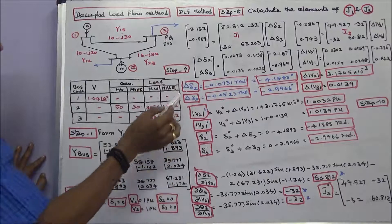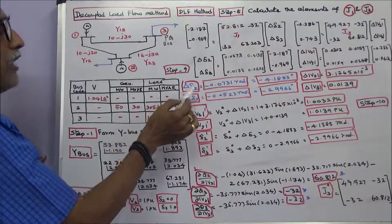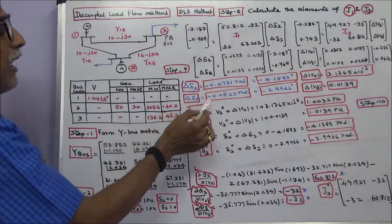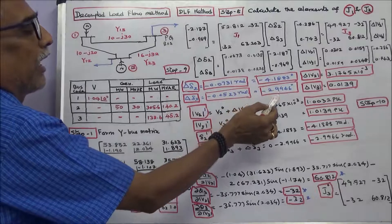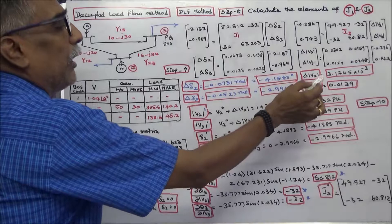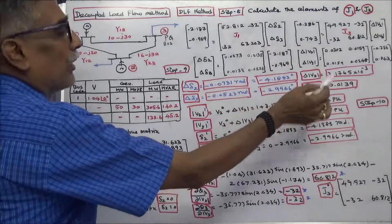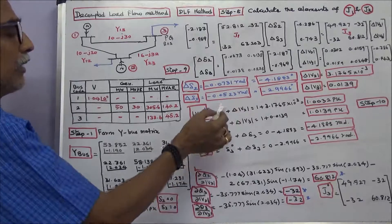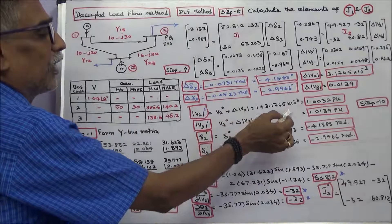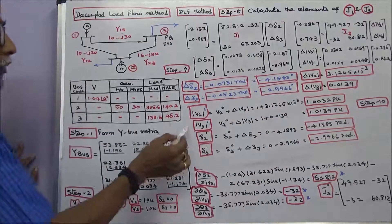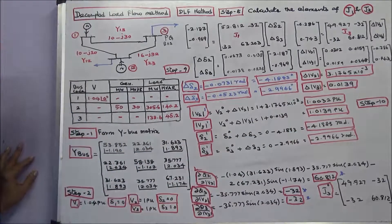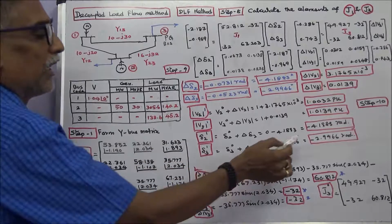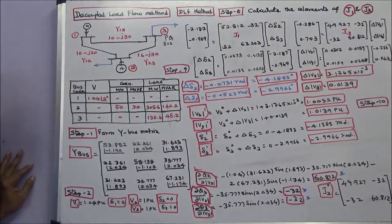Step 9: Calculate the change in delta 2 and delta 3, and changes in voltage magnitudes. Change in delta 2 = -0.07 radians or -4.1883 degrees. Change in delta 3 = -0.0523 radians or -2.9966 degrees. Change in V2 = 3.1765 × 10⁻³, change in V3 = 0.0139. Step 10: Calculate the first iteration values as old value plus change. V2 first iteration = 1 + 3.1765×10⁻³ = 1.0032 per unit. V3 first iteration = 1.0139 per unit. Delta 2 first iteration = -4.1883 degrees. Delta 3 first iteration = -2.9966 degrees. This is how we work out this problem.